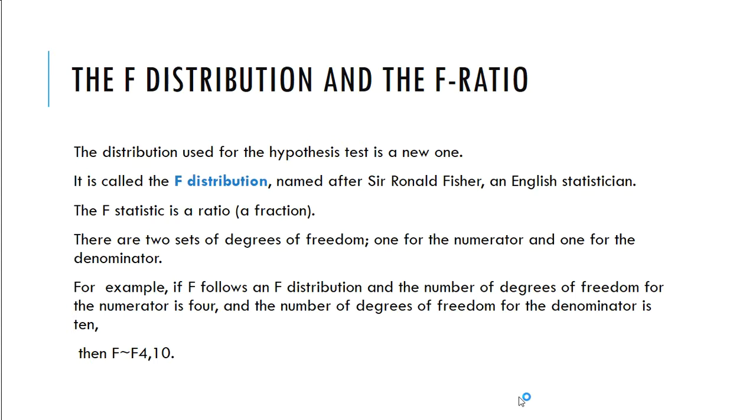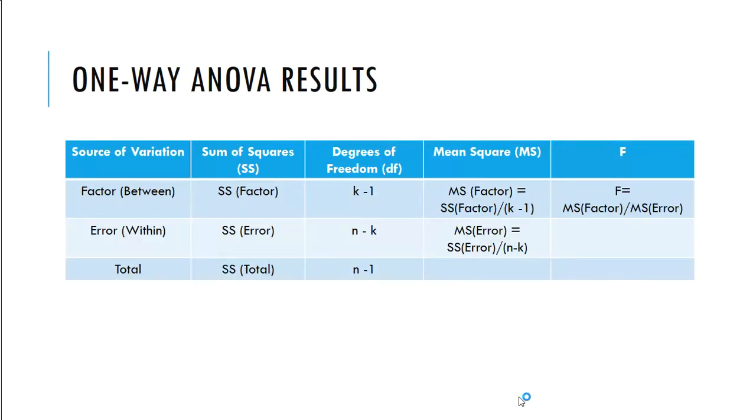So for example, if F follows an F distribution with the number of degrees of freedom for the numerator is 4, and the number of degrees of freedom for the denominator is 10, then it's F tilde F4 comma 10. All right.